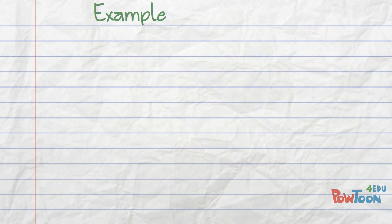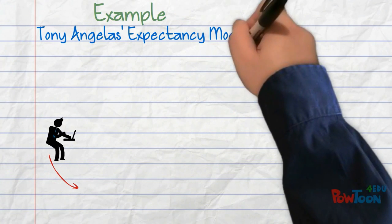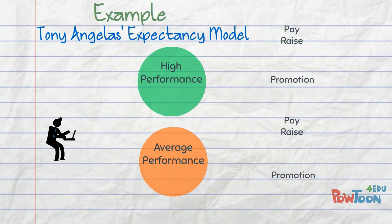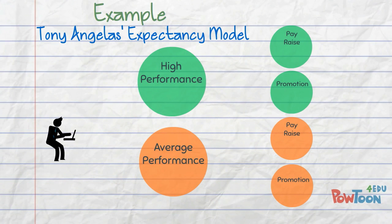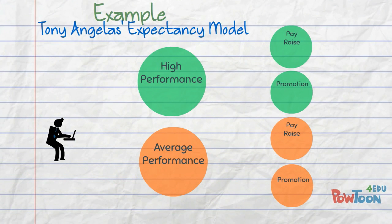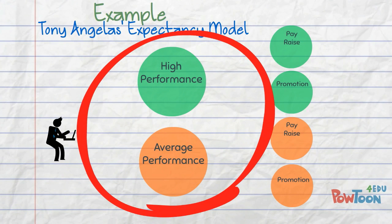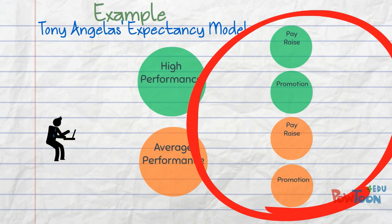In the example before you, we see the expectancy model for Tony Angeles. First, we have outcomes. Outcomes are the consequences that follow certain work behaviors. First-level outcomes are of particular interest to the organization — for example, high performance versus average performance. Second-level outcomes are consequences that follow the attainment of a particular first-level outcome and are more personally relevant to an individual worker — for example, a pay raise or promotion.